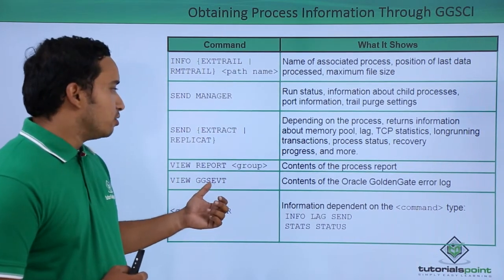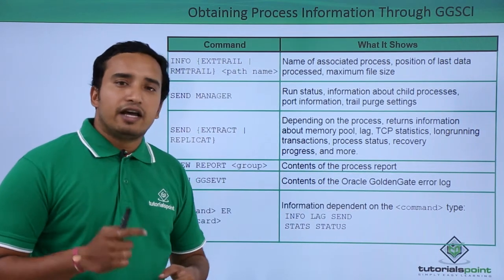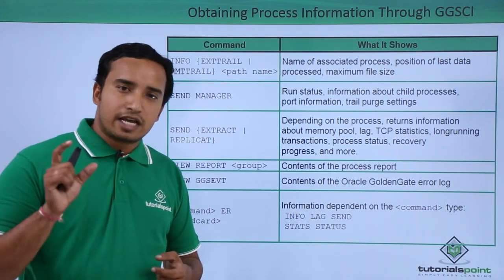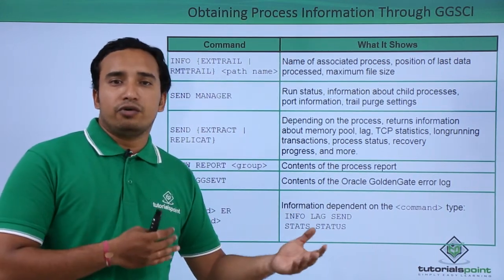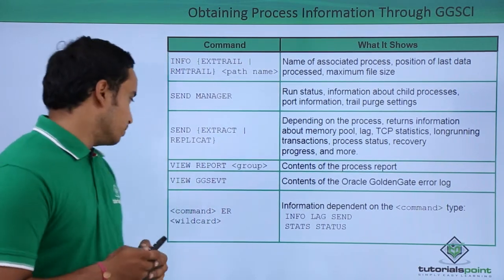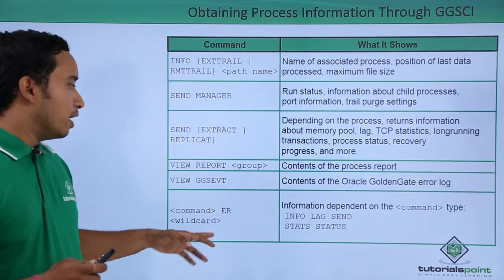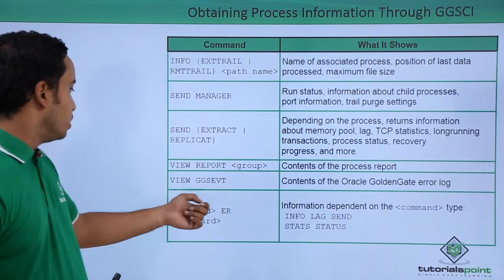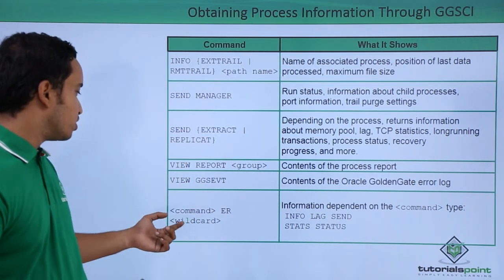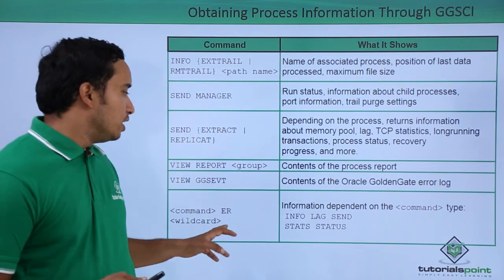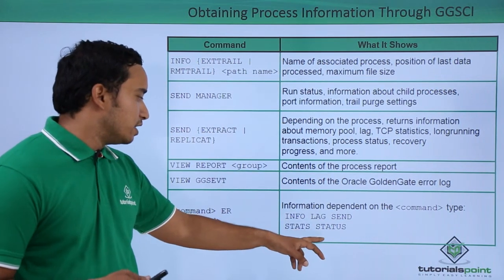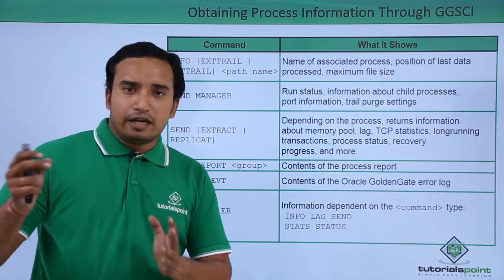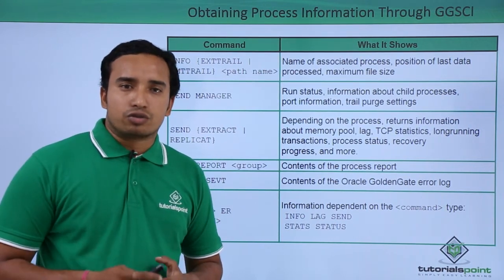VIEW GGS EVENT lets you view the GoldenGate event error log, which can be viewed from the GGSCI command or directly from the operating system. You can also use wildcards — for example, you can use ER followed by a wildcard, where ER stands for extract. You can apply wildcard to LAG, STATS, or STATUS commands without giving the entire process name.